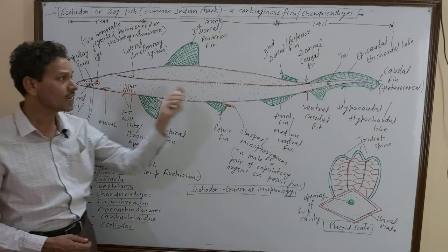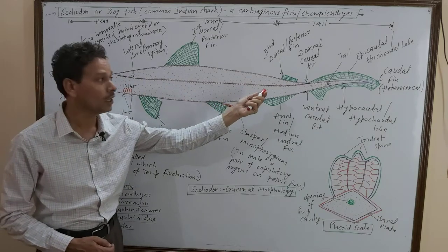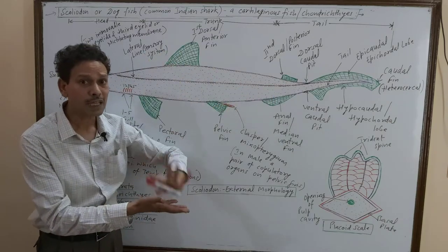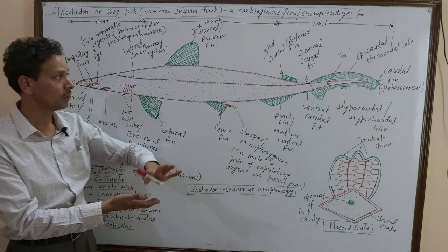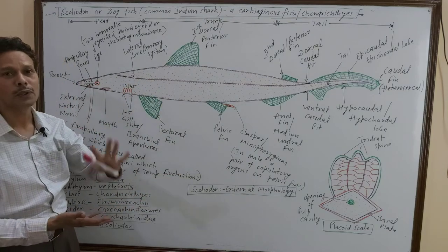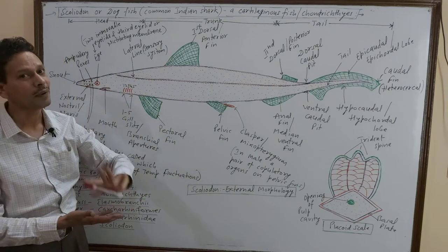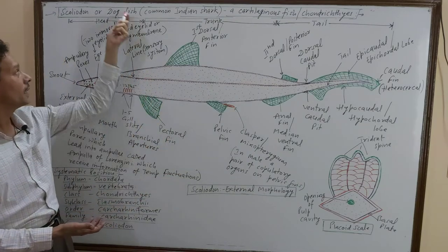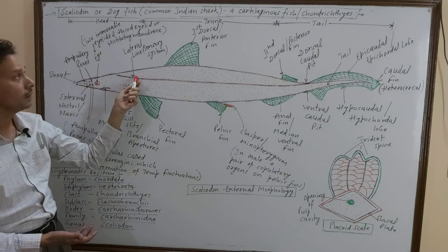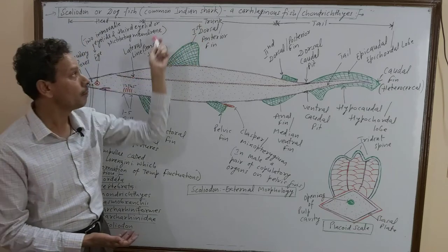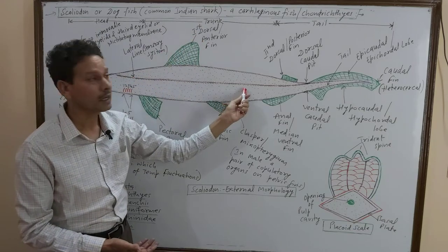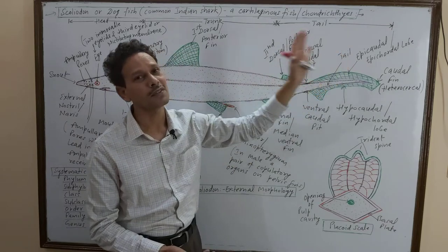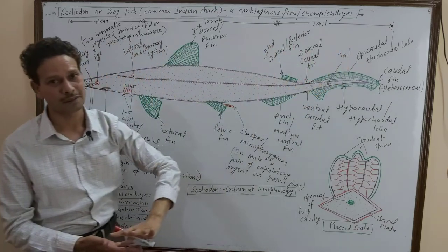How does the fish look? It has an elongated body, laterally compressed body. The entire body of Scoliodon is divided into three parts: the head region, the middle part is the trunk region, and the last posterior part is the tail region.